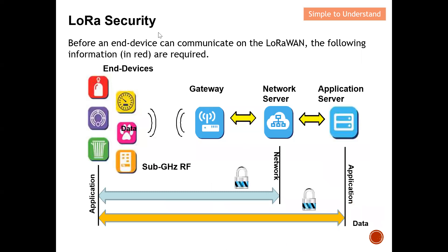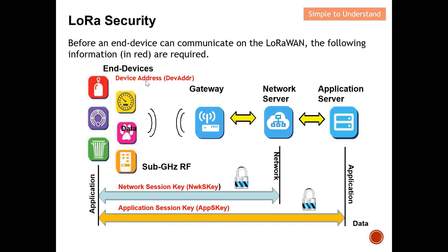Before any end device or LoRa device can communicate on the LoRaWAN network, the following information is required. There are three things we need before an end device can join a LoRaWAN network. First, we need the Device Address, which is a unique number to identify the end device. We also need the Network Session Key and the Application Session Key. The end device must have these three things before it can join the LoRaWAN network.